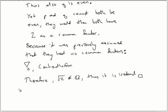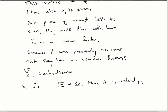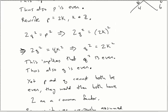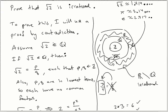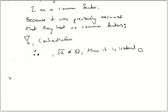Therefore, the square root of 2 is definitely not rational. The only other place it can go is the irrational numbers. Thus, √2 is irrational. We finish with a box (or filled box) to signal we're done. You can also use three dots (∴) for 'therefore.' These little symbols will pop up all over the place as you keep going.